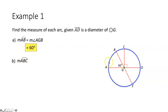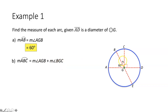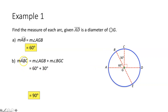For part B, we want to find the measure of arc ABC. The measure of arc ABC equals the measures of the central angles that make it up — angle AGB and angle BGC. We know angle AGB is 60 degrees. Since segment AD is a diameter of circle G, these angles form a straight line and add up to 180 degrees. So I take 180 minus 90 minus 60, and the measure of angle BGC is 30 degrees. Adding these two angle measures together, the measure of arc ABC is 90 degrees.